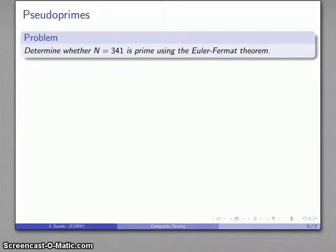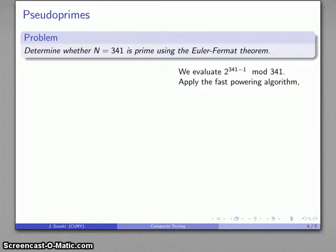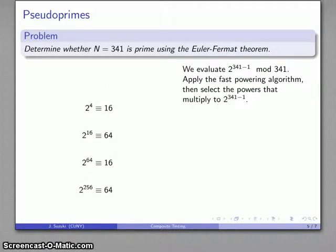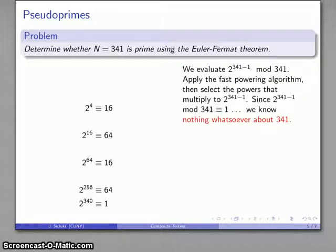Well, how about 341? Again, I'll evaluate 2 to the power 341 minus 1 mod 341 using the fast powering algorithm, and I'll select things that work, and I find 2 to the power 340 is congruent to 1. However, remember that tells us nothing about whether 341 is prime.